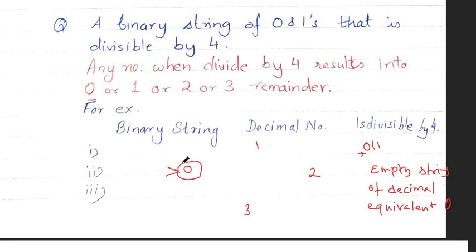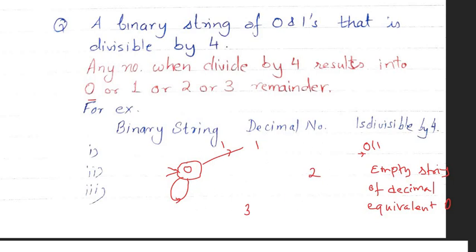Initially if the remainder is 0 and you take a bit 1, you get binary 01, so you reach state 1. If you then take a 0, giving binary 010, you remain at state 0 because 00 has remainder 0 when divided by 4. Similarly, you can draw the complete finite state machine as discussed in the earlier lecture.